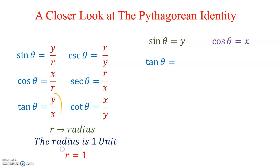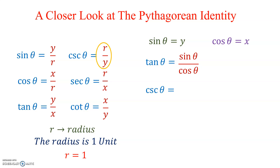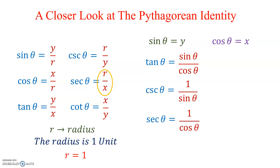If I simplify, Sine of Theta is simply the Y coordinate and Cosine is the X coordinate. So if I started with Tangent Theta, we see it's Y over X. But Y is the same as Sine and X is the same as Cosine, so I can rewrite Tangent Theta in terms of Sine and Cosine. For Cosecant, R over Y — since R equals 1 and Y is Sine, Cosecant is 1 over Sine. Secant was R over X, so 1 over Cosine. Cotangent was X over Y, so Cosine over Sine.